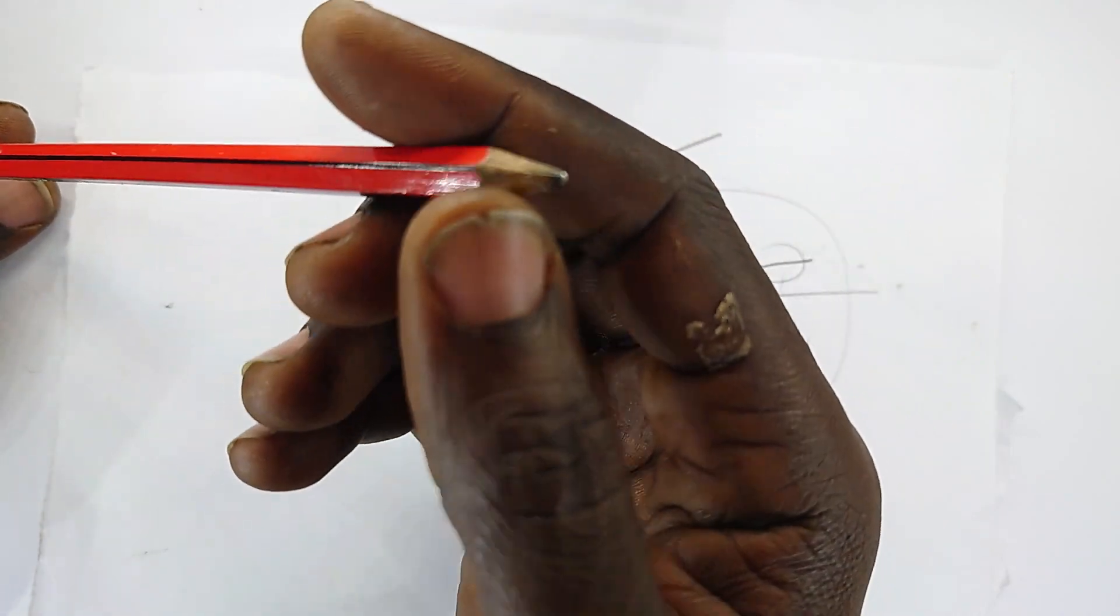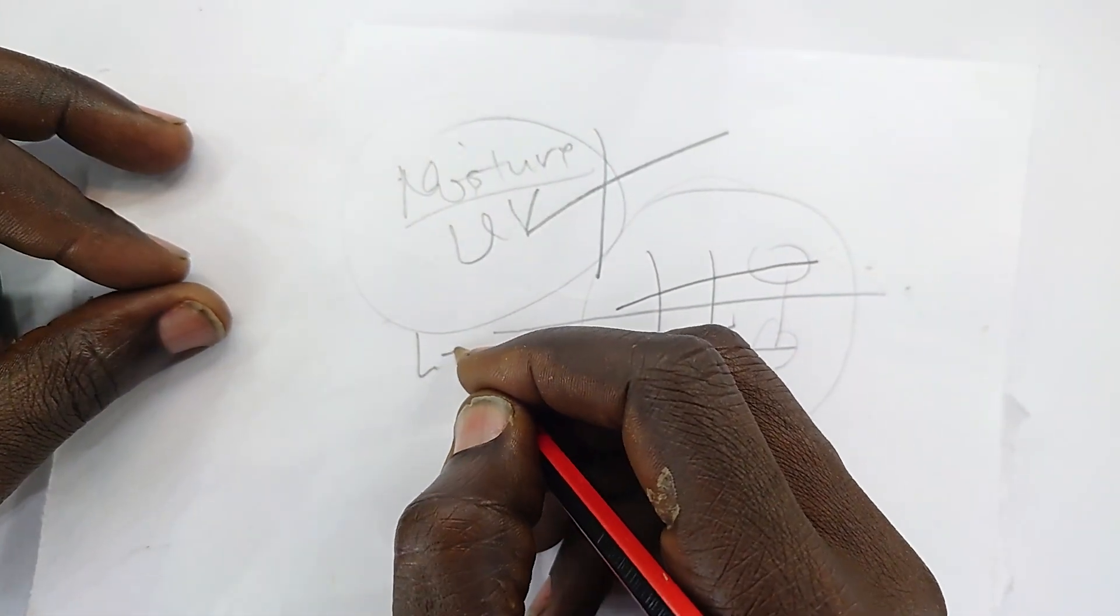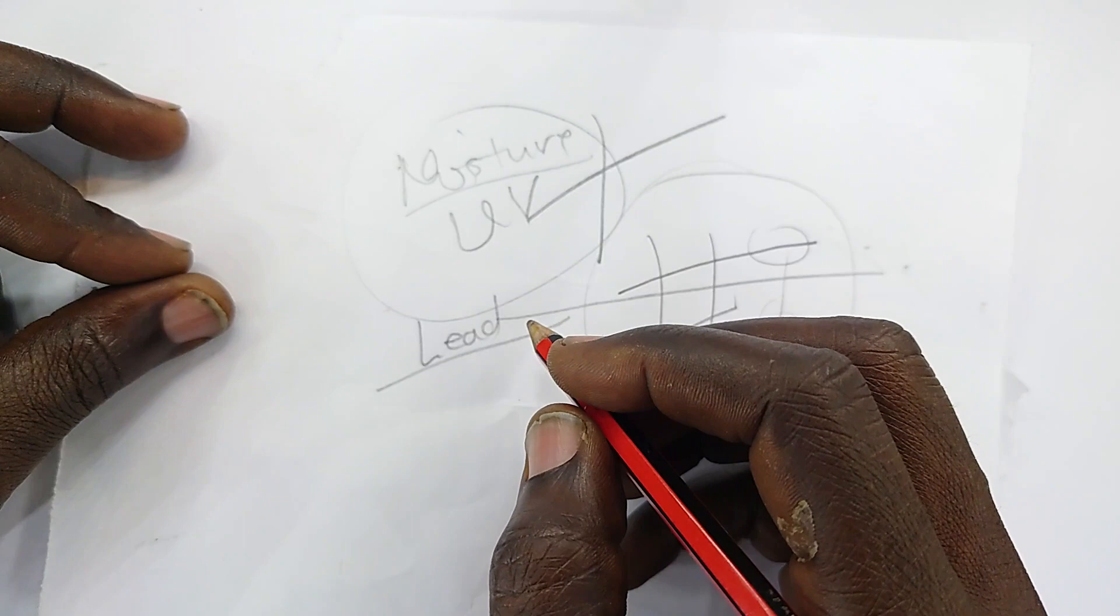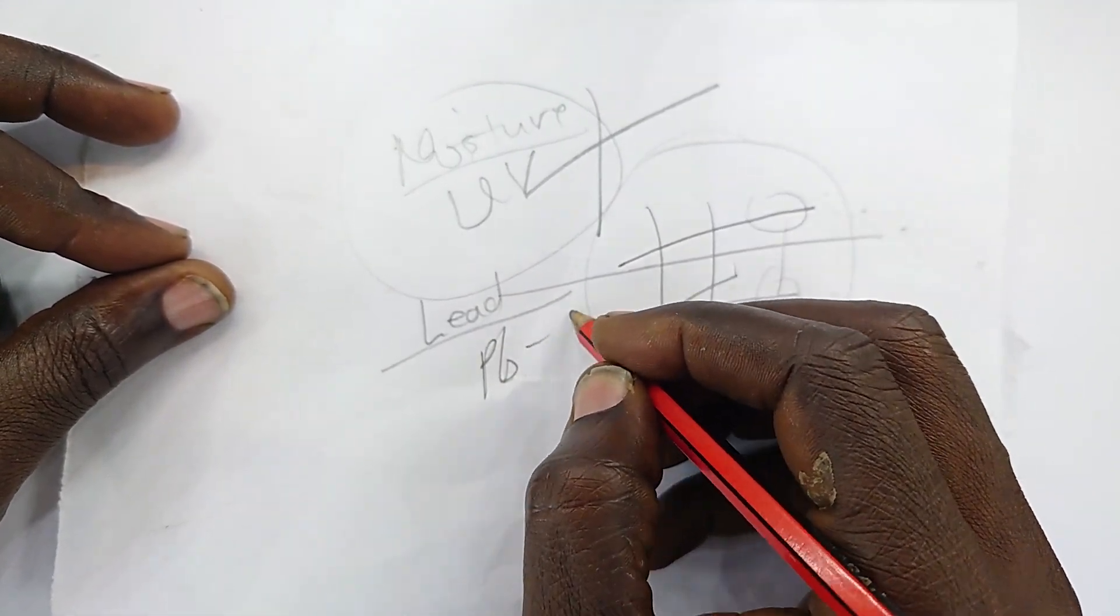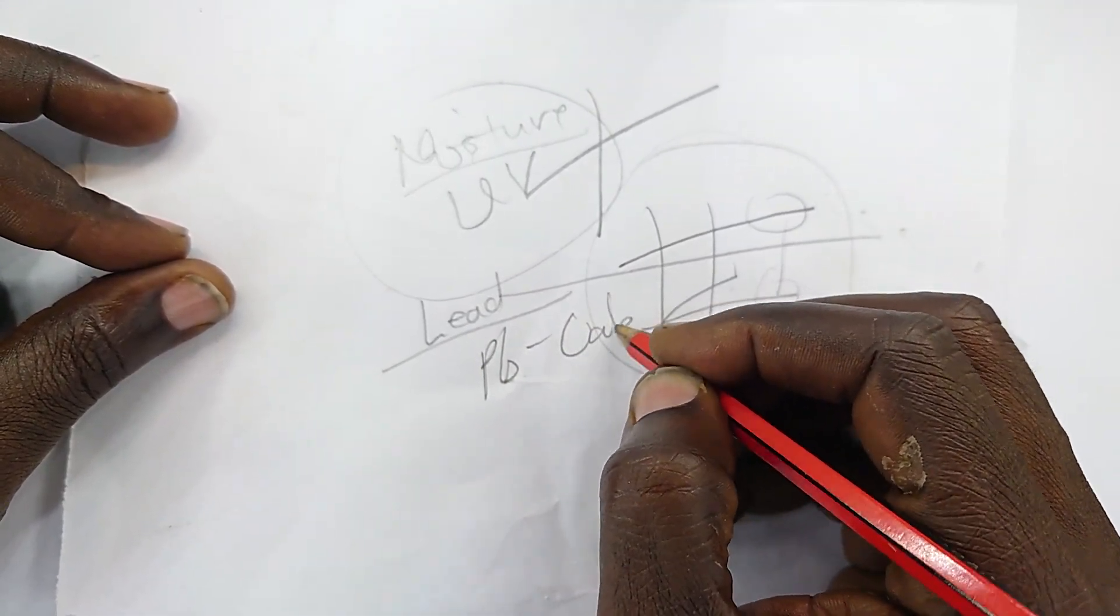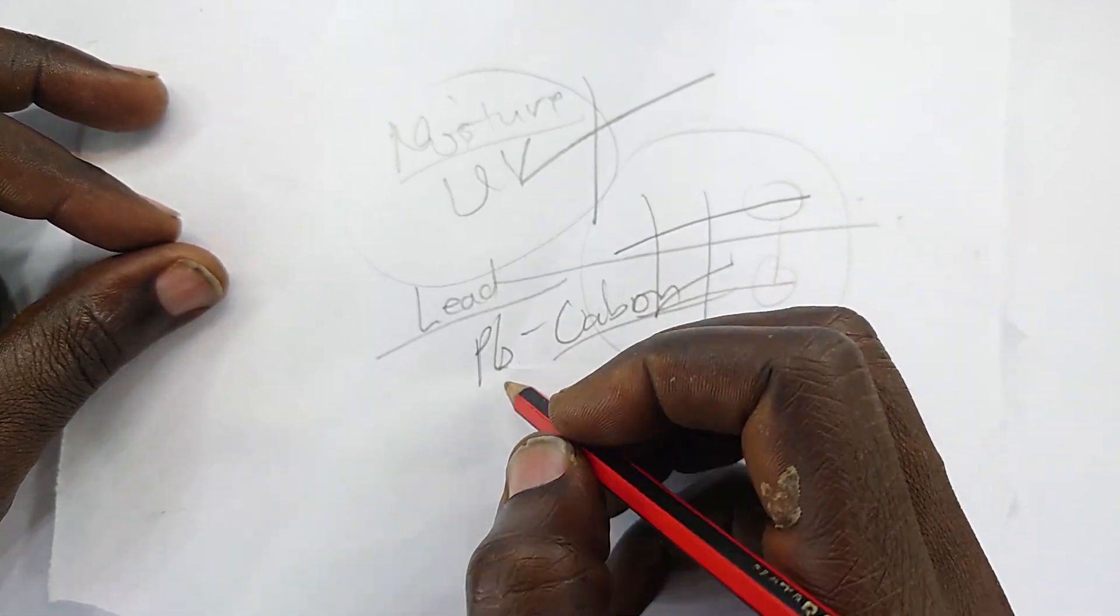And this writing lead, I don't know why it's called lead, I think in the past it used to be a mixture of lead and carbon, and that carbon was in form of graphite.